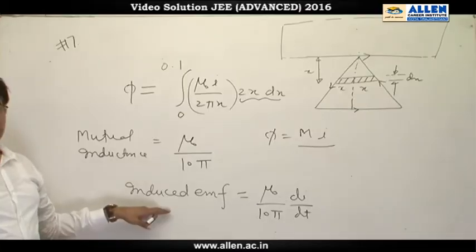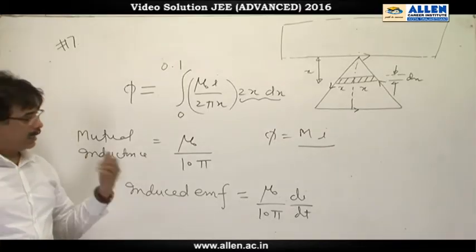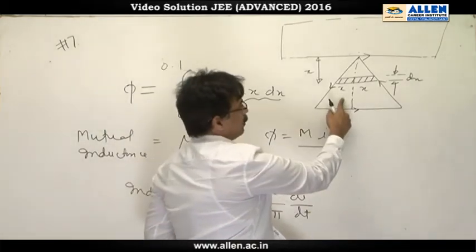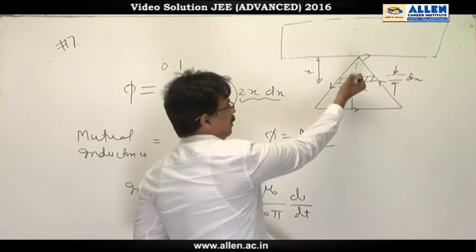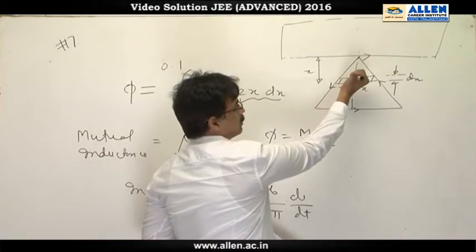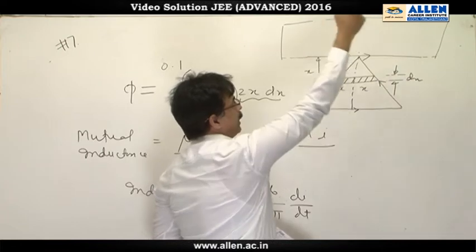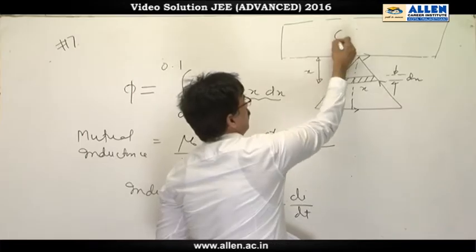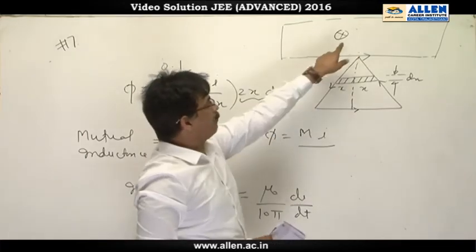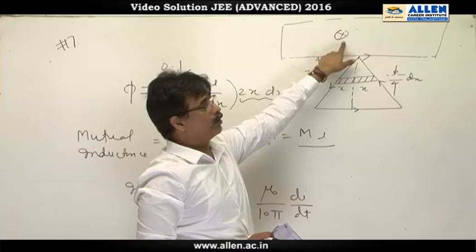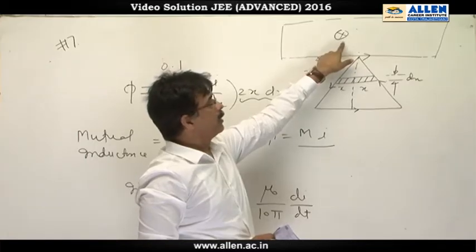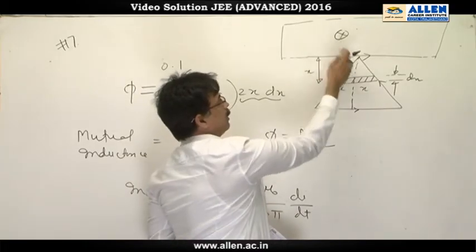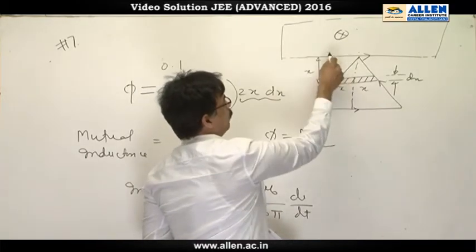Induced EMF is m di by dt. As far as direction is considered, when current in the triangular coil is varied, it becomes a magnet and its magnetic field lines point inward on this infinitely long coil. And this inward magnetic field is increasing. So induced current will produce a magnetic field that is opposite to applied field. Hence induced current will be in this direction.